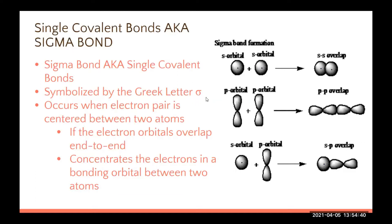A sigma bond is symbolized by the Greek letter sigma. It occurs when the electron pair is centered between two atoms. If you have two s orbitals overlapping, or two p orbitals going end to end, the sigma bond concentrates the electrons in a bonding orbital between the two atoms.